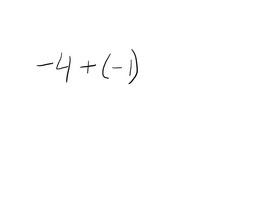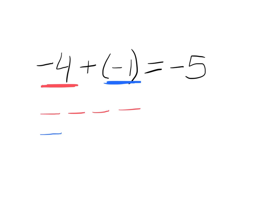What about this problem: negative four plus negative one? Draw your own picture and think what the answer would be. For negative four, you should have drawn four negatives — one, two, three, four. For negative one, you should have drawn one negative. At this point, don't cancel anything out because they're all negatives — you can only cancel if there are positives and negatives. In this case, we just have five negatives altogether, so the answer is negative five.